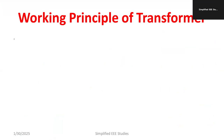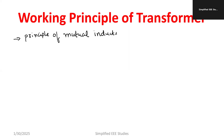The main working principle of transformer is the principle of mutual induction. Mutual induction is actually a part of Faraday's law of electromagnetic induction. There are two types of induction: one is called self induction, and the other one is mutual induction. Both come under Faraday's laws of electromagnetic induction.